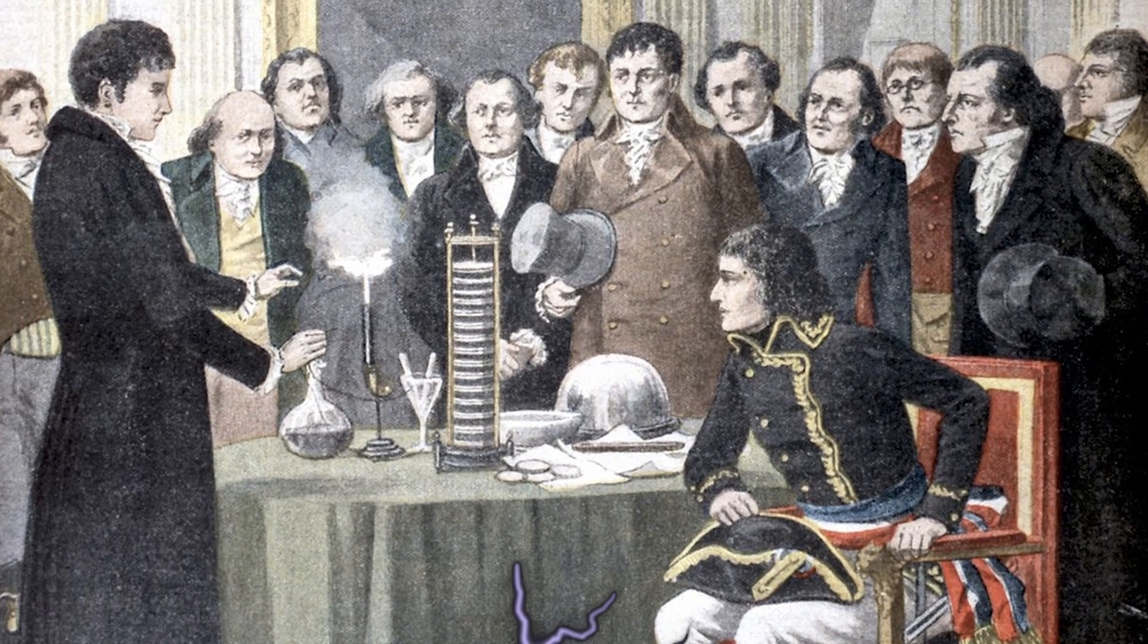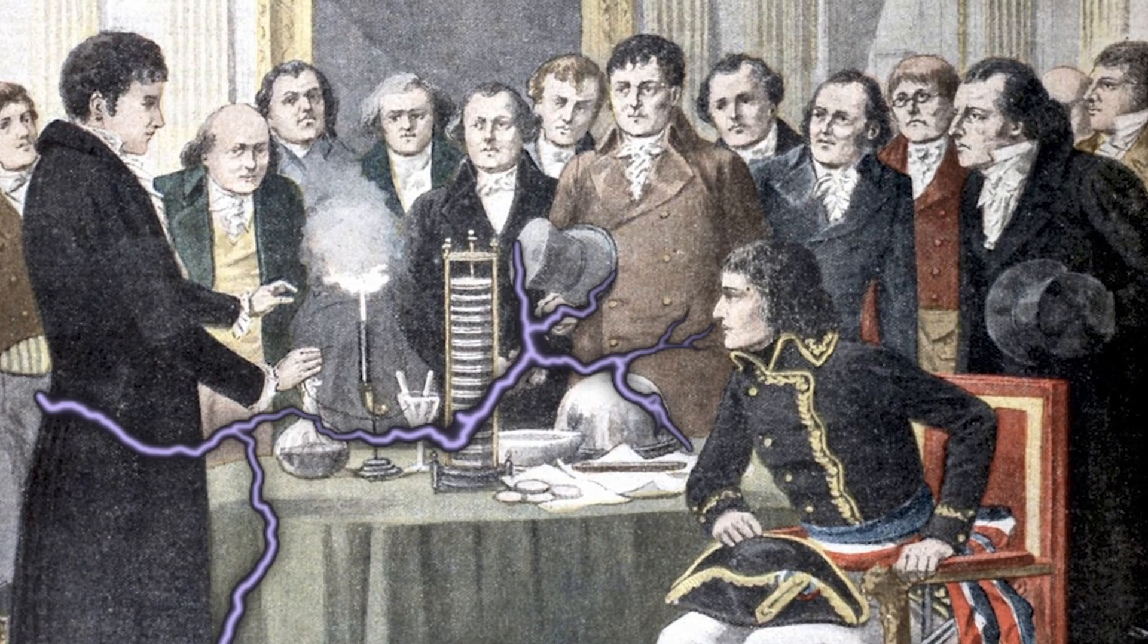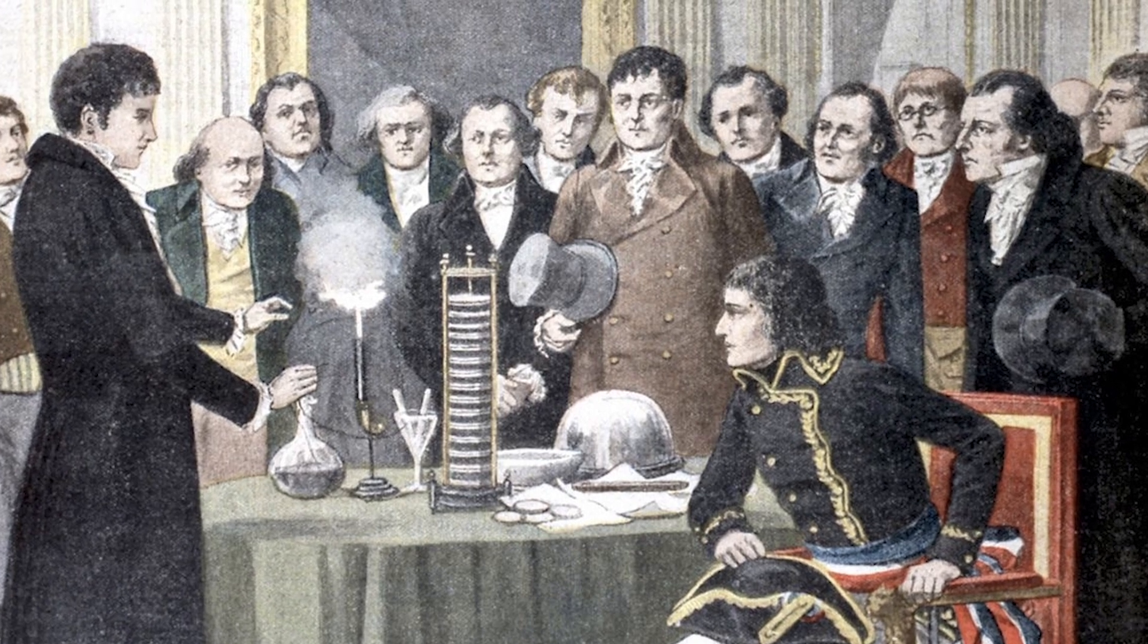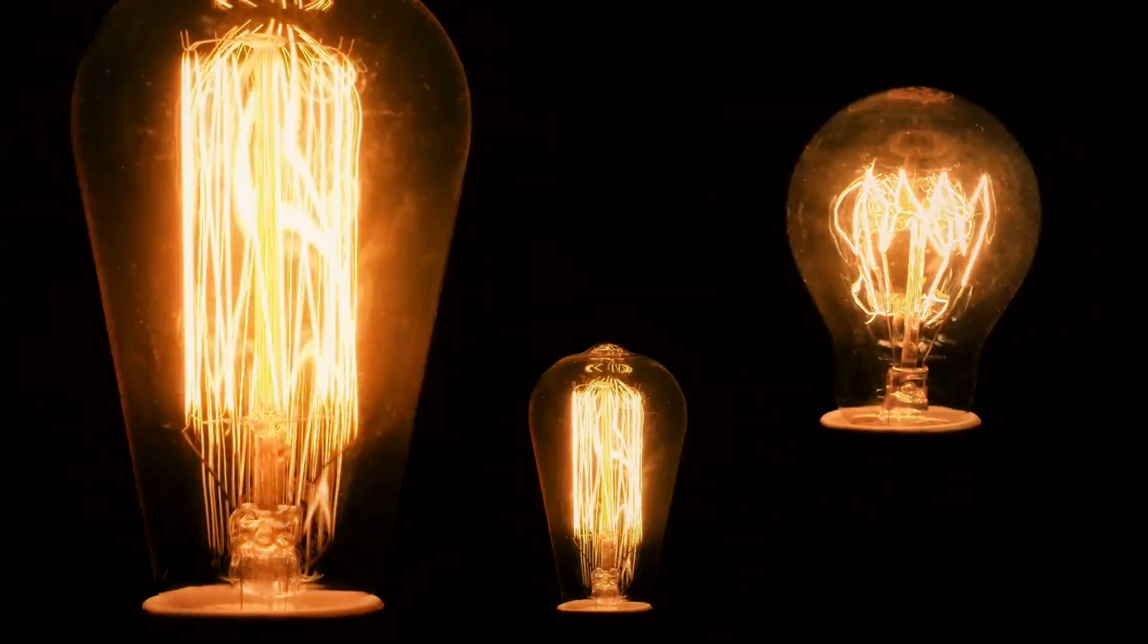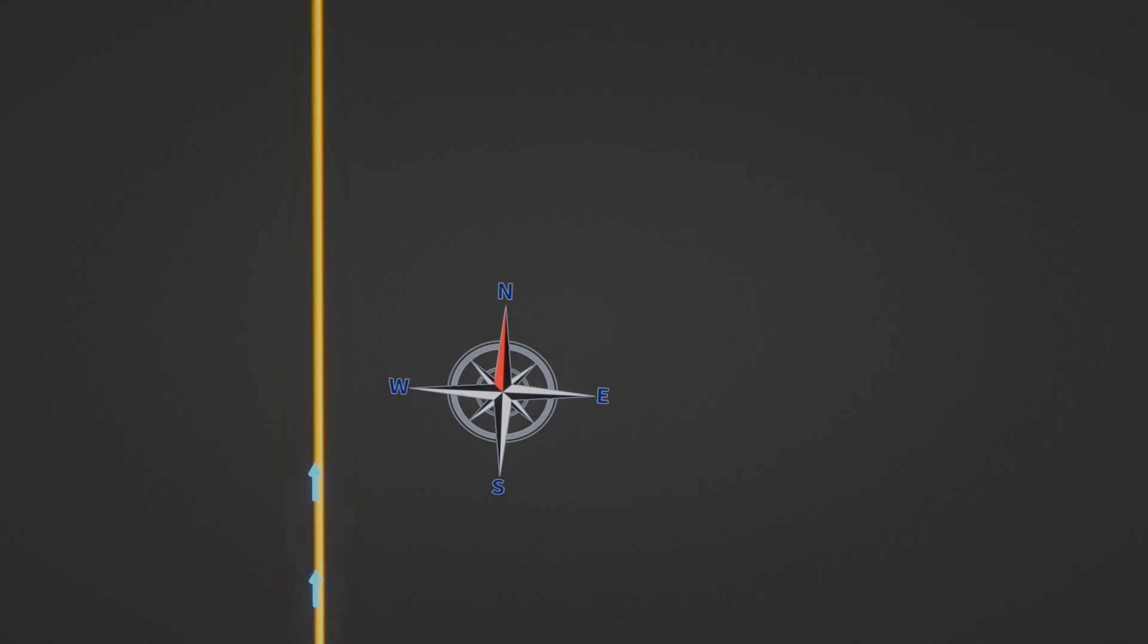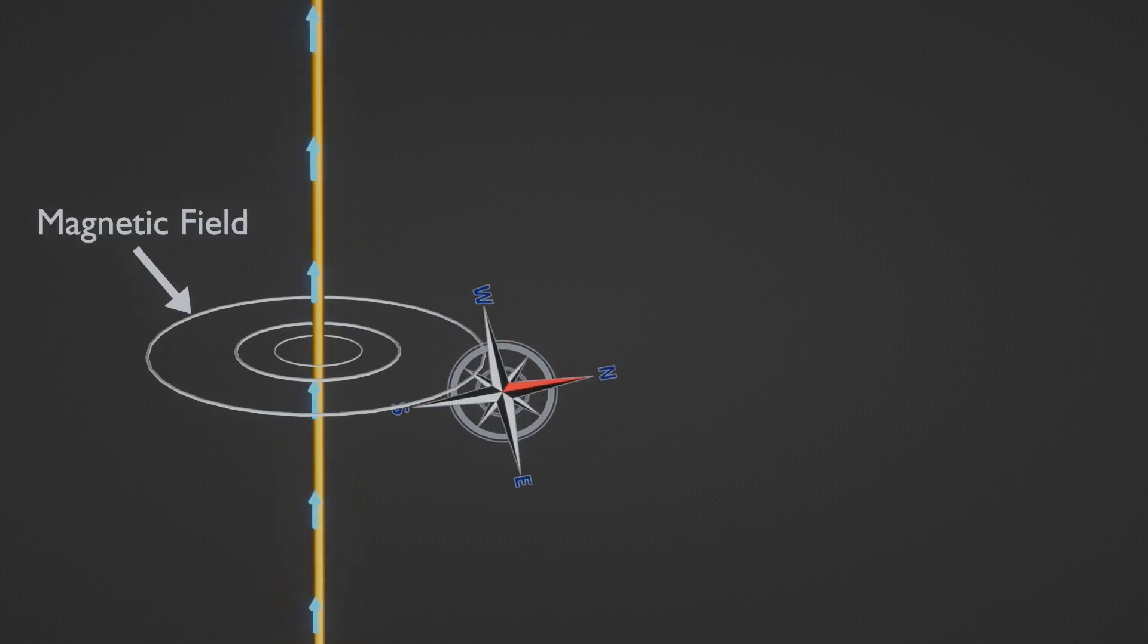Electricity, a phenomenon known to the ancients in the form of lightning and sparks, took on a new significance in the early 19th century. It became the epicenter of physics research, with the revelation that a current of wire passing across a compass needle could set it spinning.